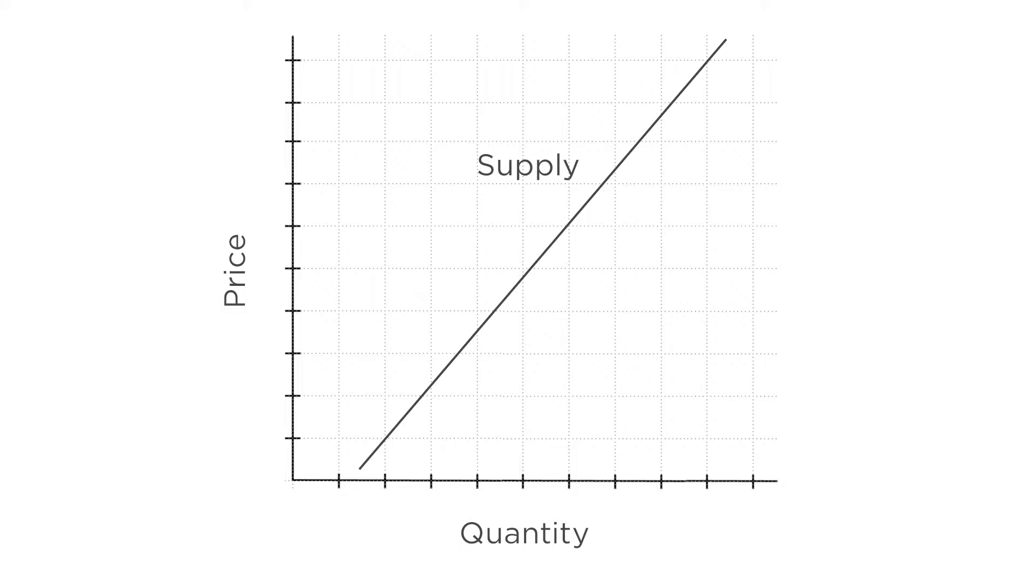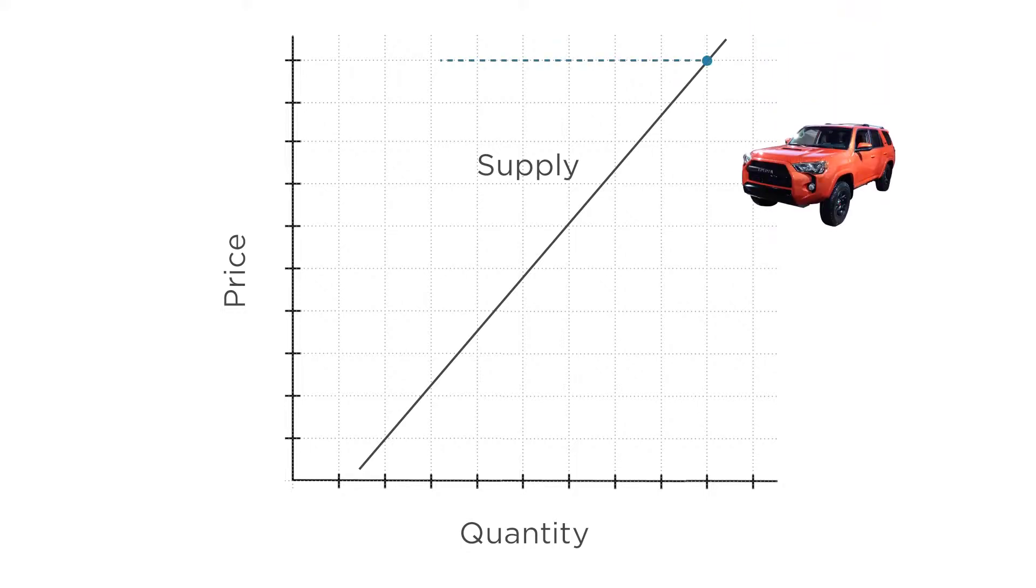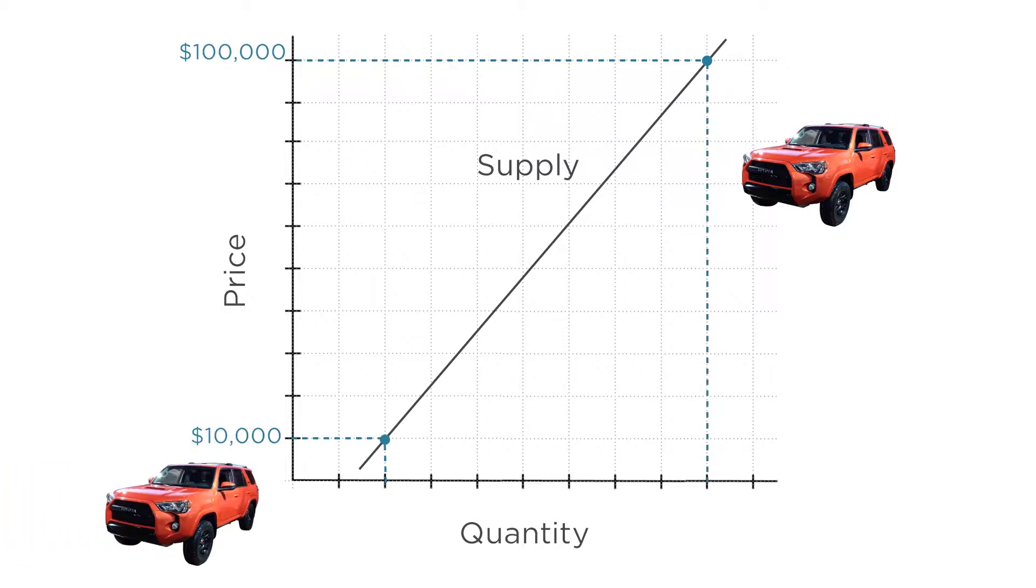For example, if you're Toyota and you could sell a particular car model for $100,000, you'll make a lot more of those cars than if you could only sell that model for $10,000. And now we also know the technical reasons for the upward sloping supply curve. Firms maximize profits subject to input prices and competition in the market. At higher prices, firms choose to produce at a point of higher marginal cost. And since marginal cost increases as production increases due to diminishing marginal product, higher marginal cost means more production.